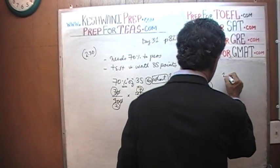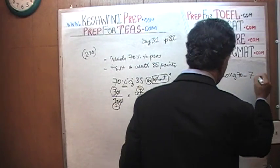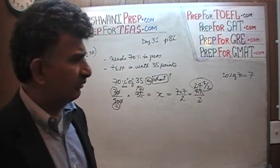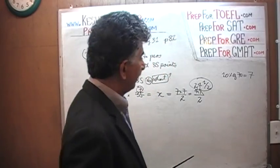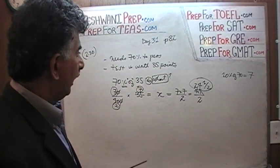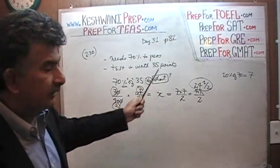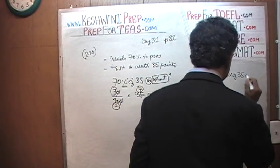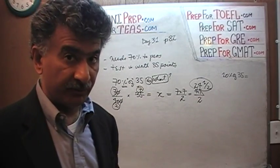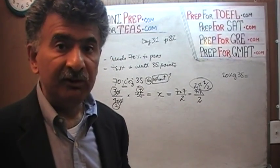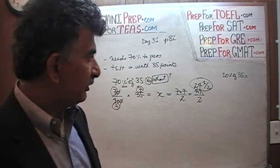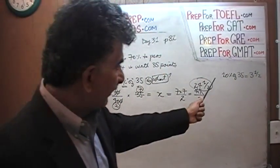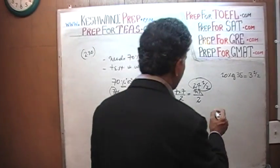10% of 35 — how much is 10% of 35? We want to find 70% of 35. Let's first talk about 10%. 10% means one-tenth of something. What is one-tenth of 35? We just move the decimal place — it's going to be 3 and a half. So 10% of 35 is 3 and a half.